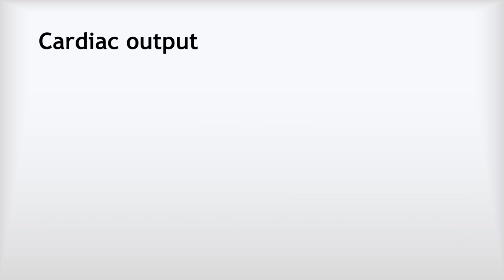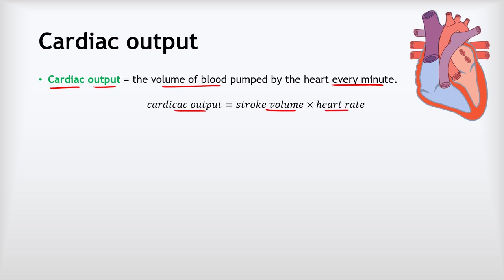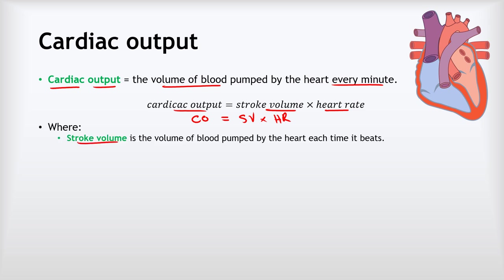The next concept is cardiac output. Cardiac output is the volume of blood pumped by the heart every minute, calculated using this equation: cardiac output (CO) equals stroke volume (SV) multiplied by heart rate (HR). The stroke volume is the volume of blood pumped by the heart each time it beats, and the heart rate is the number of times the heart beats each minute.